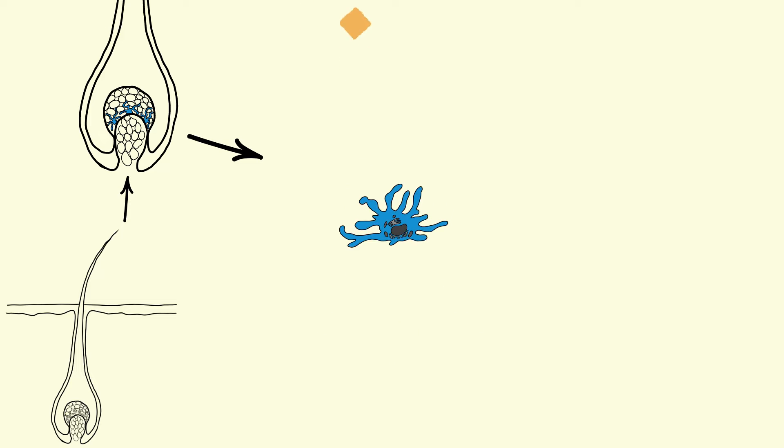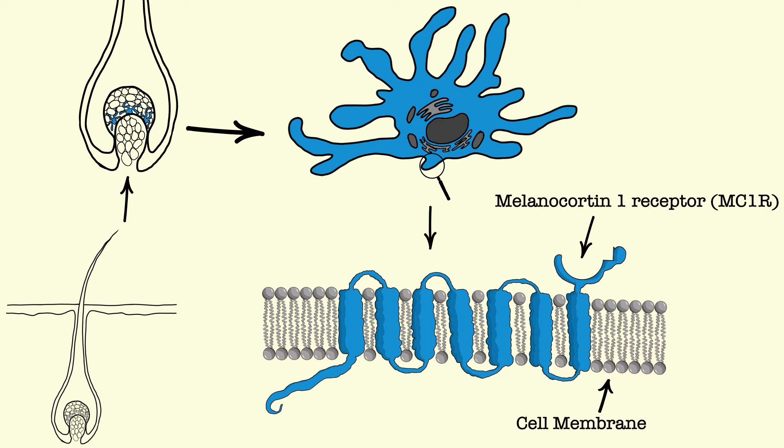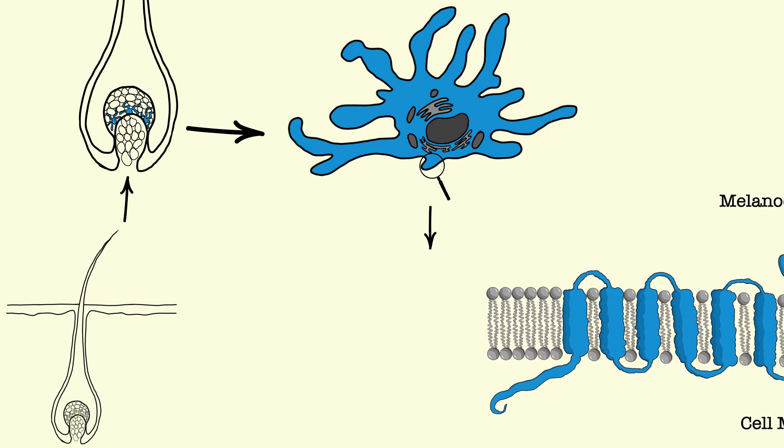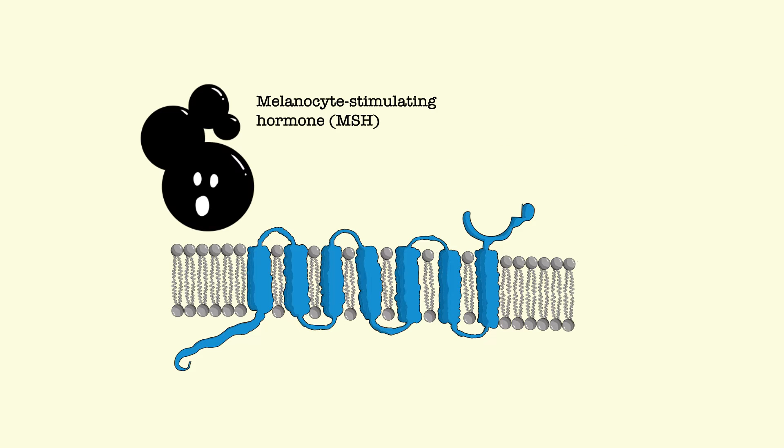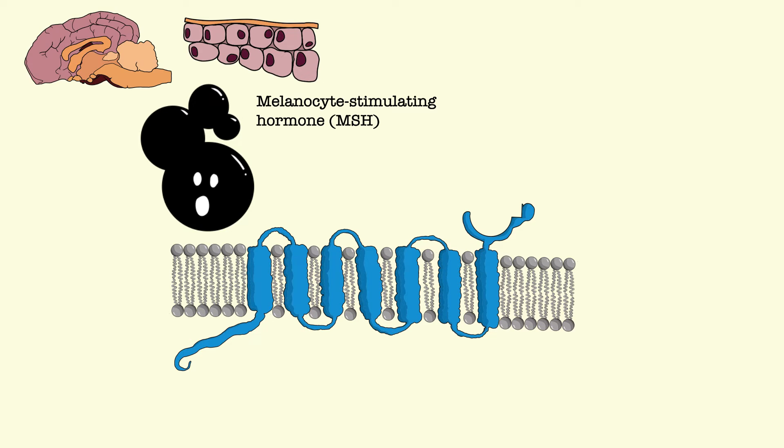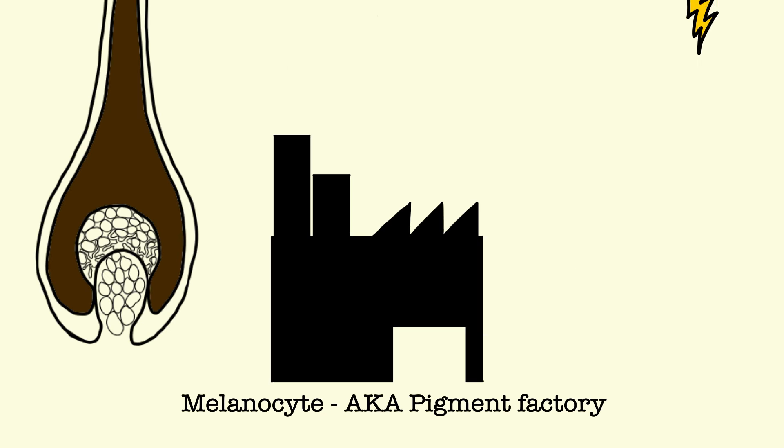On the surface of these pigment factories is the melanocortin 1 receptor, often shortened to MC1R, which can receive signals from one of two molecules telling the melanocyte which pigment to produce. Melanocyte stimulating hormone, or MSH, is continuously produced in the skin and brain of canines. When it binds to MC1R, it will induce eumelanin production in the pigment factories known as melanocytes.